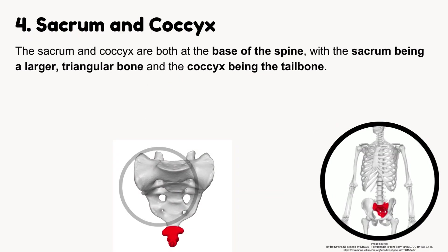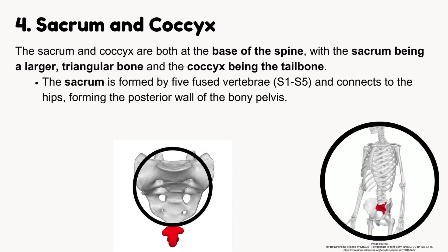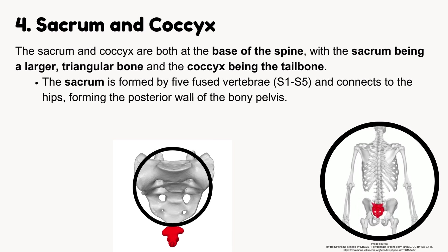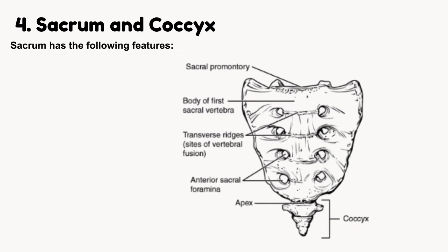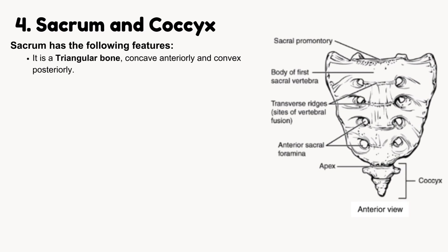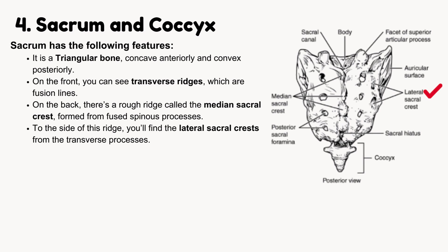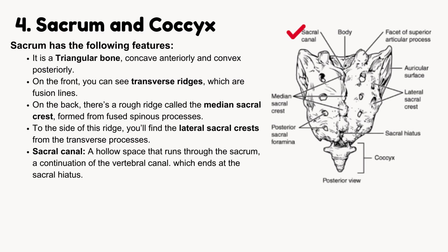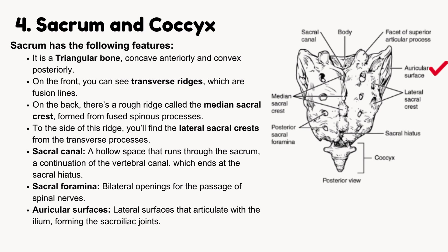Sacrum and coccyx. The sacrum and coccyx are at the base of the spine. The sacrum is a larger, triangular bone; the coccyx is the tailbone. The sacrum is formed by five fused vertebrae, S1 to S5, and connects to the hips, forming the posterior wall of the bony pelvis. The sacrum is concave anteriorly and convex posteriorly. On the front you can see transverse ridges, which are fusion lines. On the back, there's a rough ridge called the median sacral crest, formed from fused spinous processes, with lateral sacral crests to the side from the transverse processes. The sacral canal is a hollow space running through the sacrum, a continuation of the vertebral canal, which ends at the sacral hiatus. Sacral foramina are bilateral openings for the passage of spinal nerves. Auricular surfaces are lateral surfaces that articulate with the ilium, forming the sacroiliac joints.